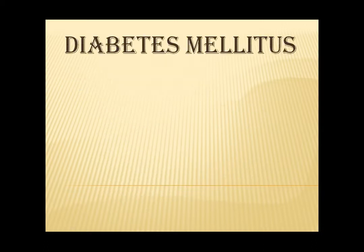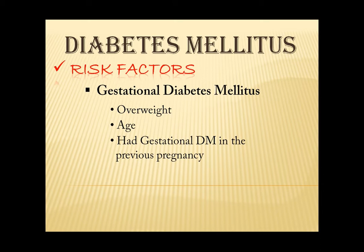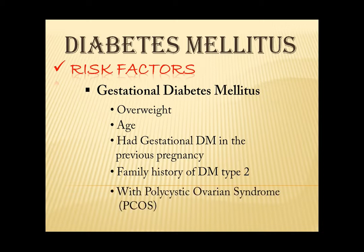Risk factors for having gestational diabetes mellitus: First is overweight — a person who is overweight before they get pregnant or who gained too much weight during pregnancy. Age — a pregnancy over 25 years of age. Had gestational diabetes mellitus in the previous pregnancy. Family history of DM Type 2. And with polycystic ovarian syndrome.